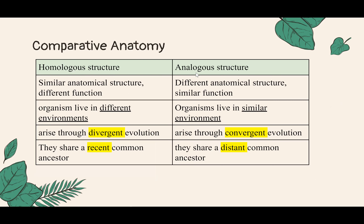To compare: homologous structures are similar in structure but different in function. These organisms live in different environments and share a recent common ancestor. This type of evolution is called divergent evolution — they come from a recent common ancestor but evolved into different functions. Analogous structures are different in structure but have very similar function. These organisms live in similar environments but have a very distant common ancestor.